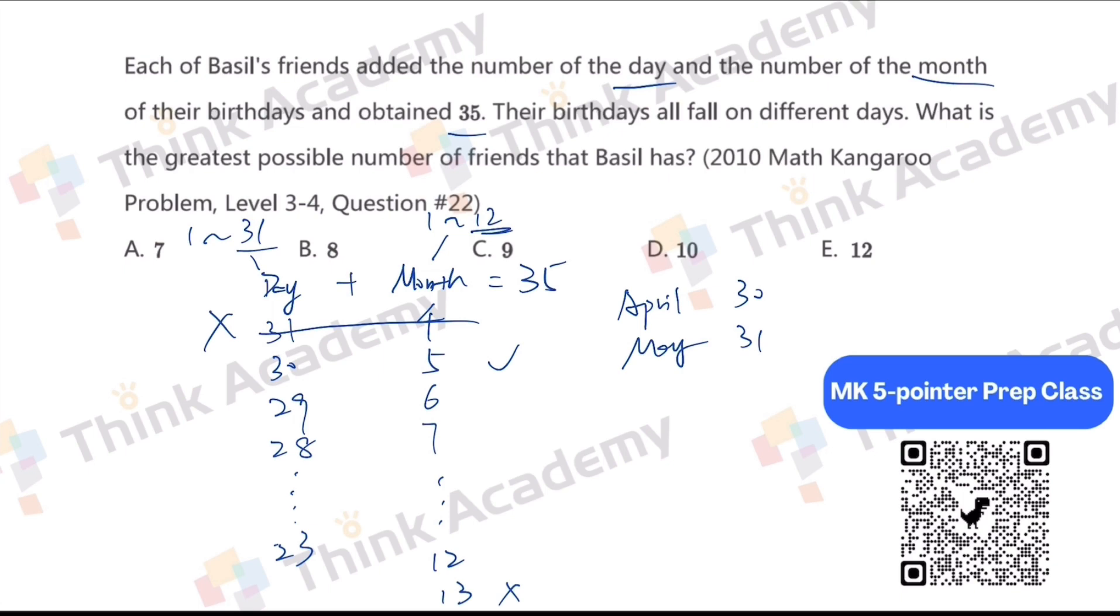So we got 12 minus 5 plus 1, which is 8. So B is the answer.